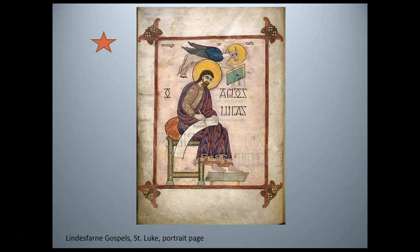Matthew usually has the symbol of a man, suggesting the human aspect of Christ. Mark often has the lion, symbolizing the triumph and divinity of Christ and his resurrection. John has the symbol of an eagle, referring to Christ's second coming. These are symbols we'll look at in other periods and see how this Christian iconography progresses in later art periods.